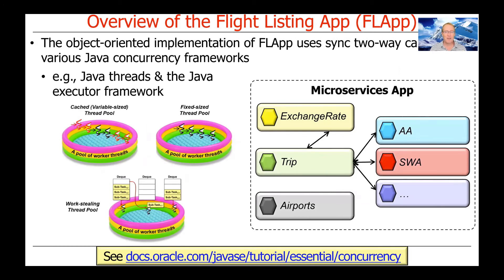There will be an object-oriented version of FLAP that uses synchronous two-way calls and various Java concurrency frameworks — things like Java threads and the Java executor framework, which some of you may know from the concurrent object-oriented programming course. This version uses classic Spring MVC synchronous two-way calls but with microservices, so you have a bunch of different microservices that could be mapped to different computers or different processes, allowing the system to scale up and out more effectively.